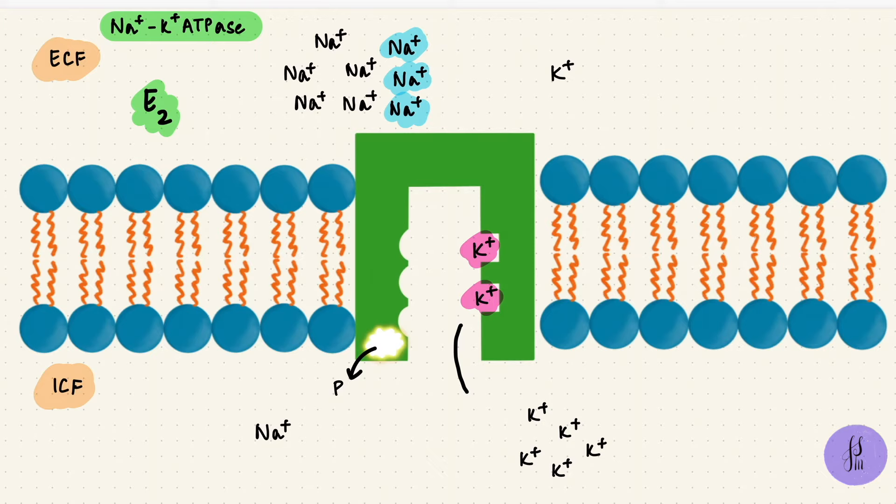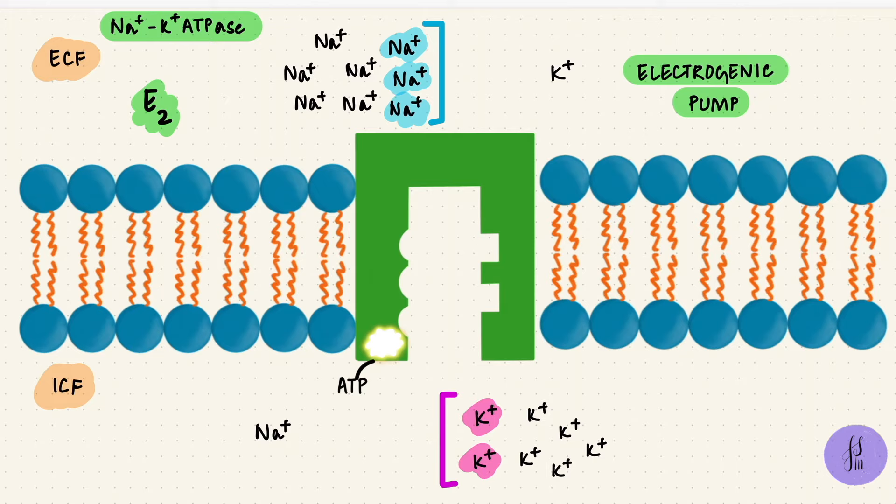And we're back at square one. By doing this, three sodium ions left the cell, and two potassium ions entered, making this an electrogenic pump, because it's creating a charge separation across the membrane. Three positive ions are leaving, two positive ions are entering. That's why the sodium potassium pump is important for maintaining the resting membrane potential.